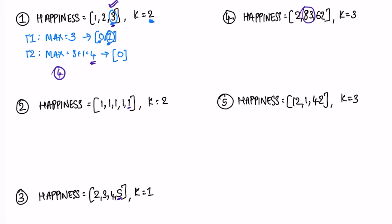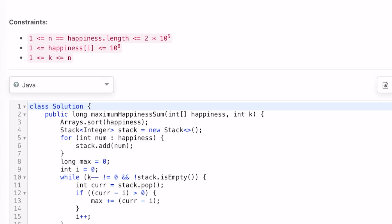To perform this greedy operation of picking the maximum value each time, you have to sort the happiness array in ascending order. In the given examples the array is already sorted, so the maximum is at the back. After sorting a general array like [83, 62] it becomes [62, 83], and now the maximum values are always present from right to left. That is the first observation: sort the array in ascending order.